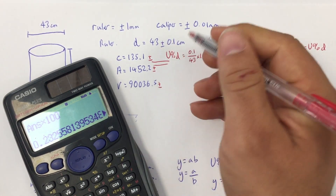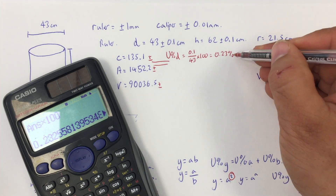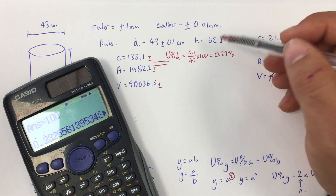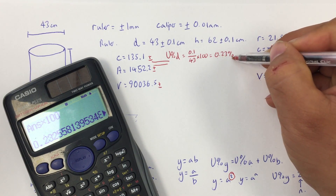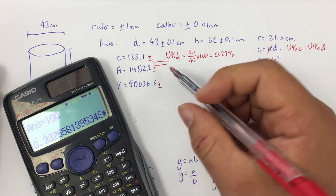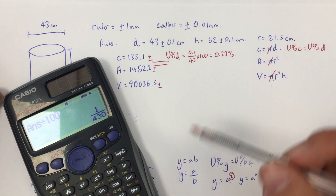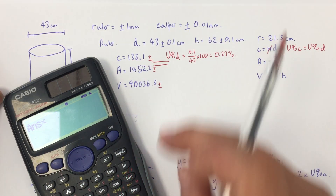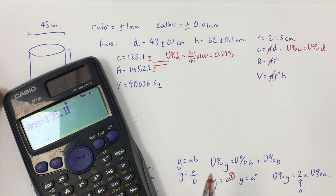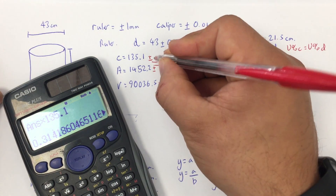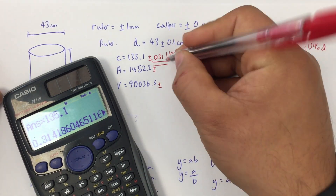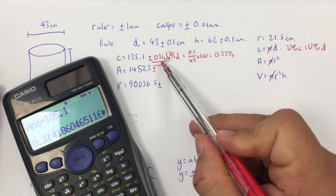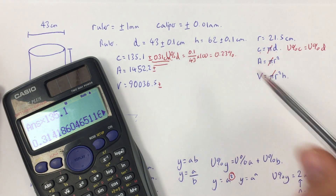To convert to absolute uncertainty, I need to find what 0.23% of 135.1 is. I divide 0.23 by 100 to turn it from a percentage into a decimal, then multiply by the circumference value of 135.1. This gives plus or minus 0.31 centimetres as my absolute uncertainty in the circumference.